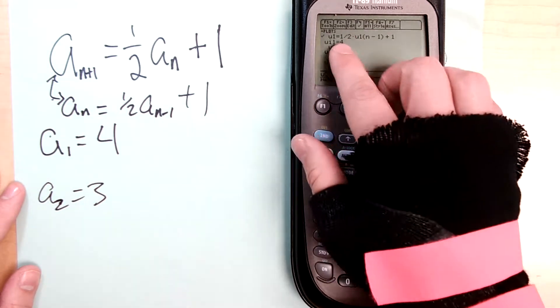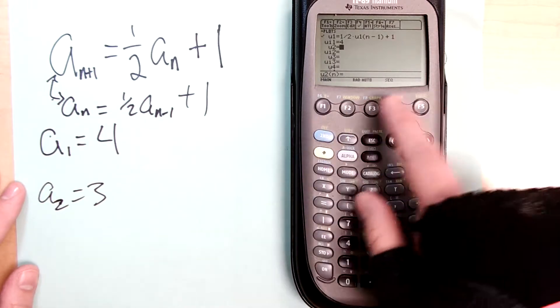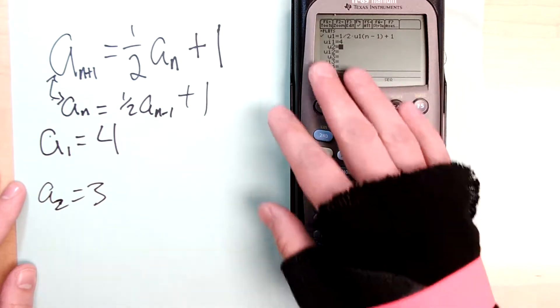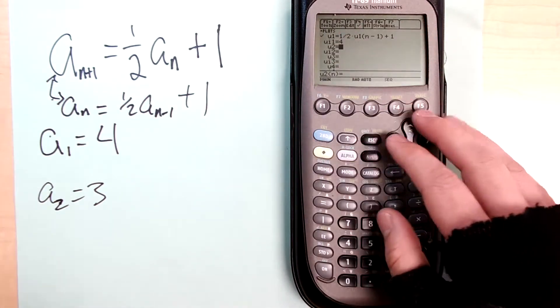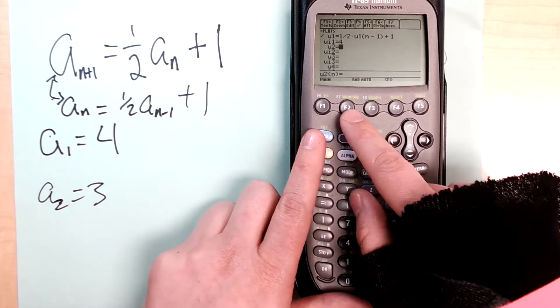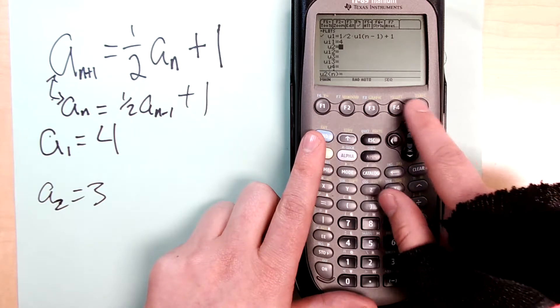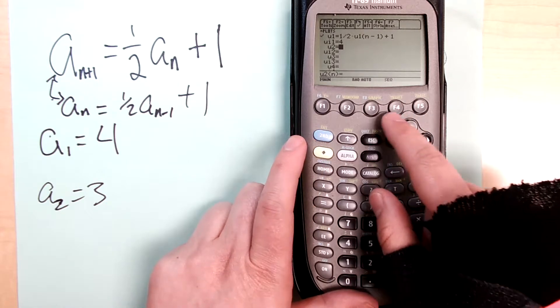I'm going to go back and just put in four because I only need the first one. Now you can do like you normally would to graph or to look at the table. To get to the graph you want to set up the window. To look at the table you want to use table set.